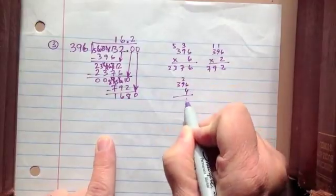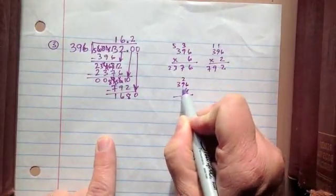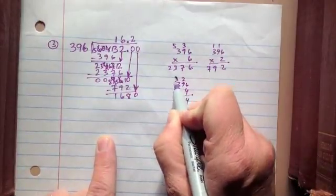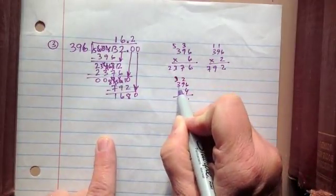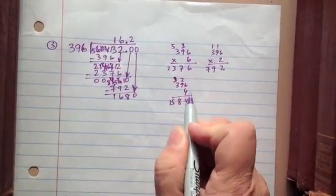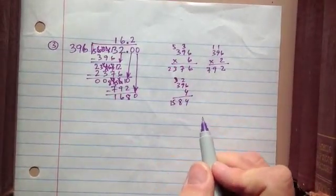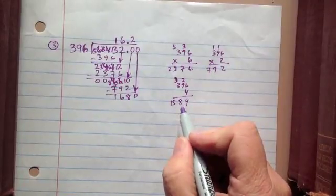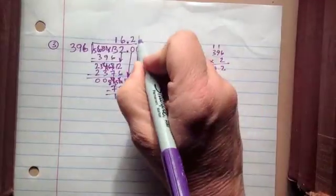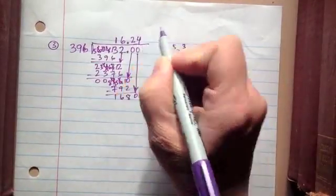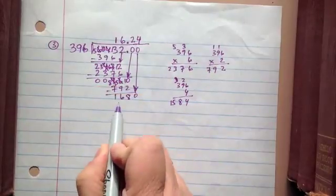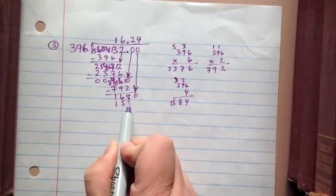4 times 6 is 24, 4 times 9 is 36, plus 2 more is 38, and then 4 times 3 is 12, plus 3 more is 15. So I have 1,584, and if I write 4 right here, 4 times 396, then would be 1,584.